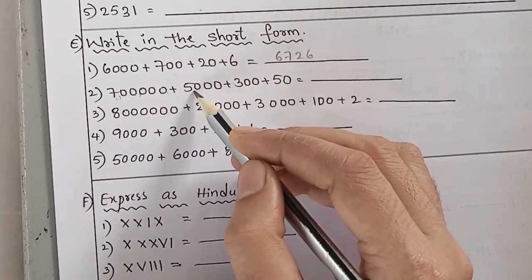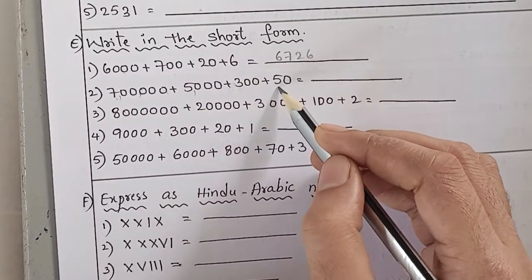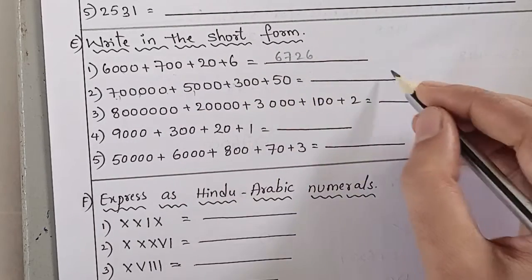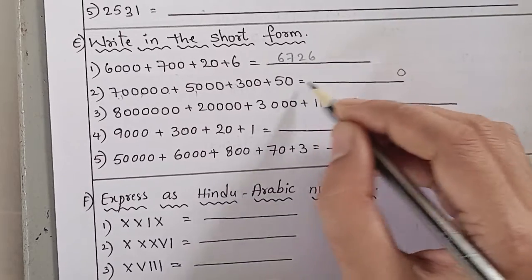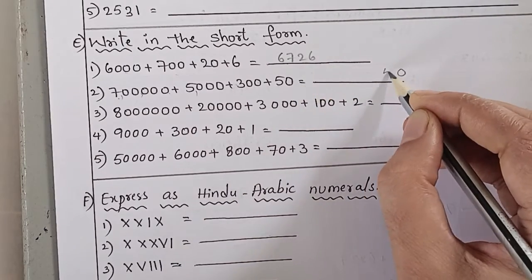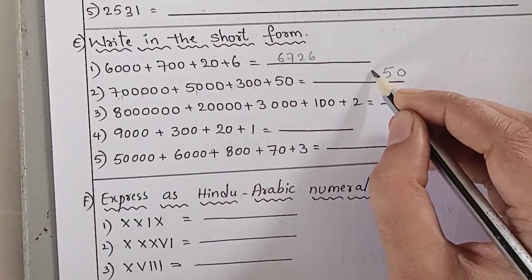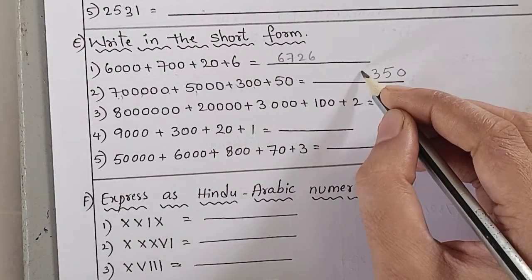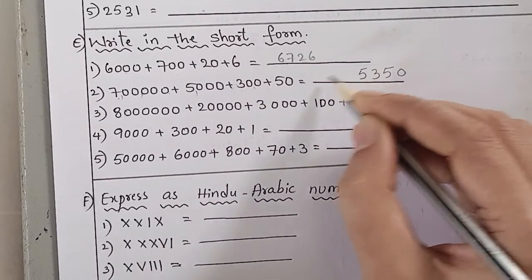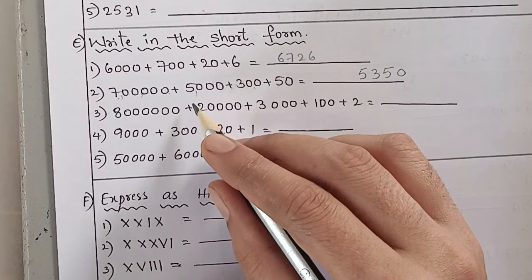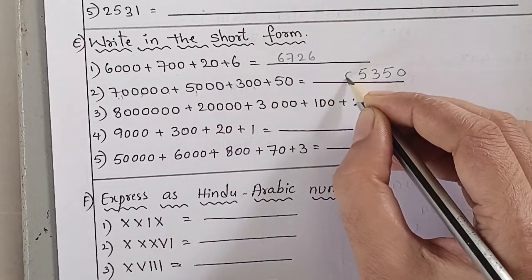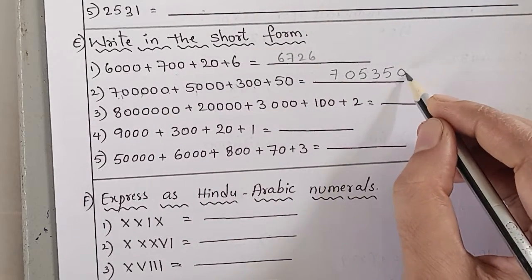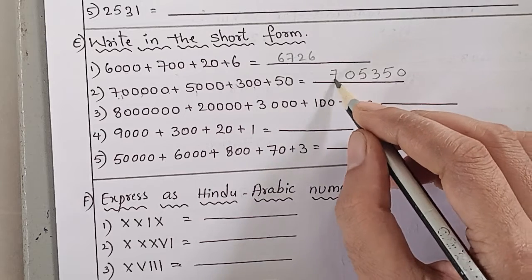Next: 75,350. In this number, ones place is not there, so we write zero. Tens place, we write five. Hundreds place, we write three. Thousands place, five. Ten thousands place, no number is there, so we write zero. Lakhs place, seven. Ones, tens, hundreds, thousands, ten thousands, lakhs.